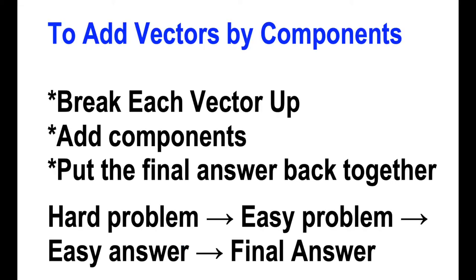When adding vectors by components, there are three main steps. We're going to break each vector up, we're going to add the components, and we're going to put the final answer back together. This is a special case of the problem-solving technique, where if you have a hard problem, one thing you can do is rewrite it as an easy problem. Solve that to get the easy answer, and then rewrite the easy answer back to give the final hard answer. This is a very general problem-solving technique.